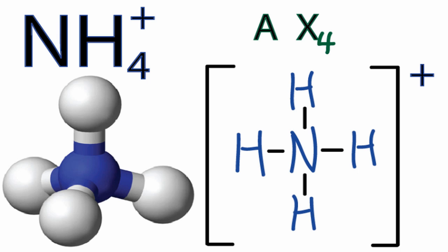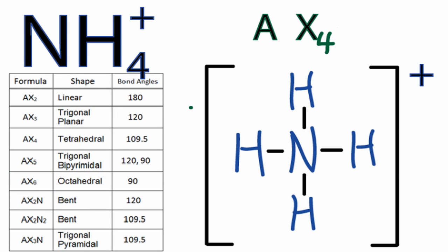You could have memorized that AX4 is a tetrahedral shape, or if you have a table available, you could look it up. As we go down our table, we see AX2, AX3, and there's AX4, which is indeed tetrahedral, and the bond angles will be about 109.5 degrees.